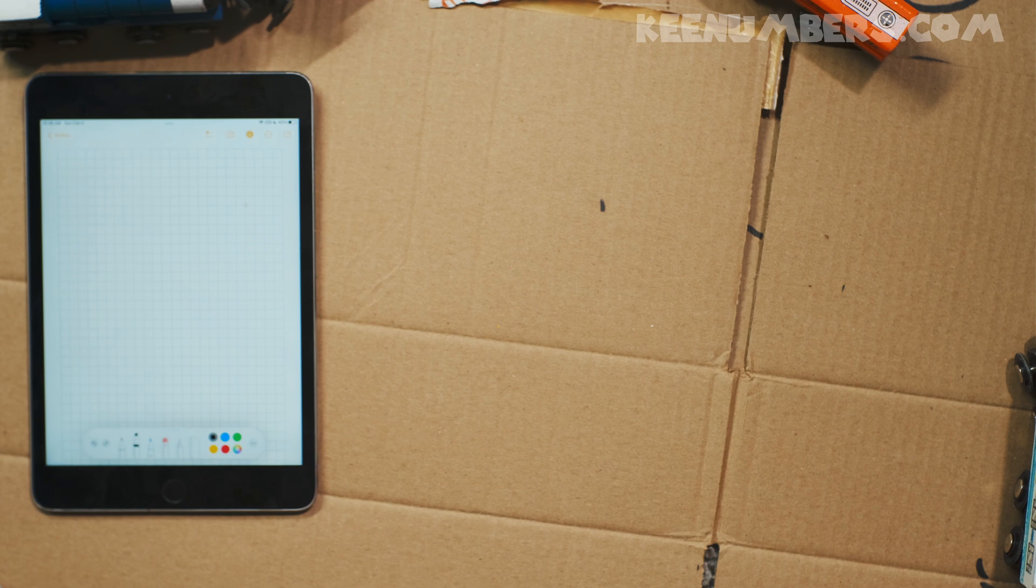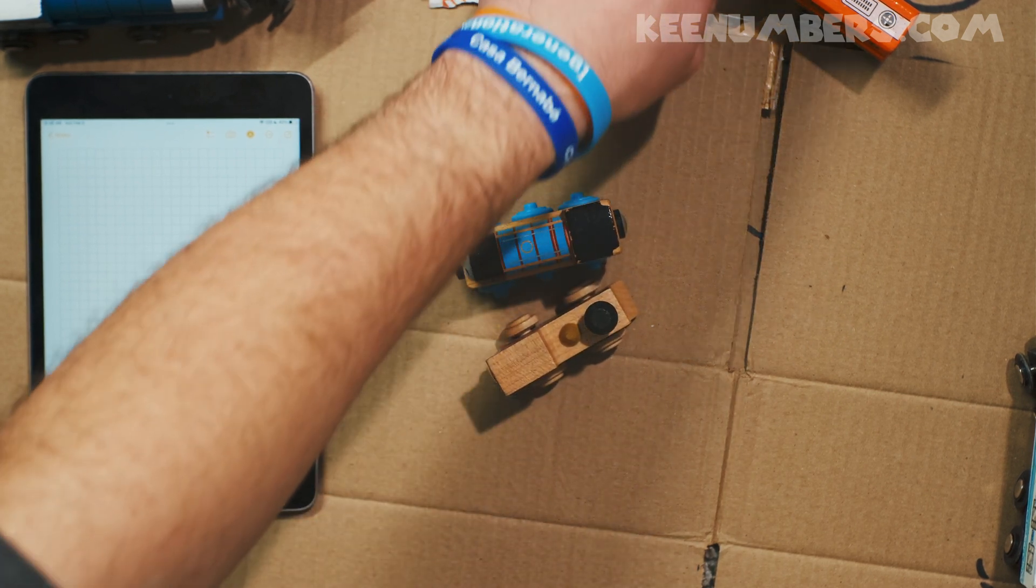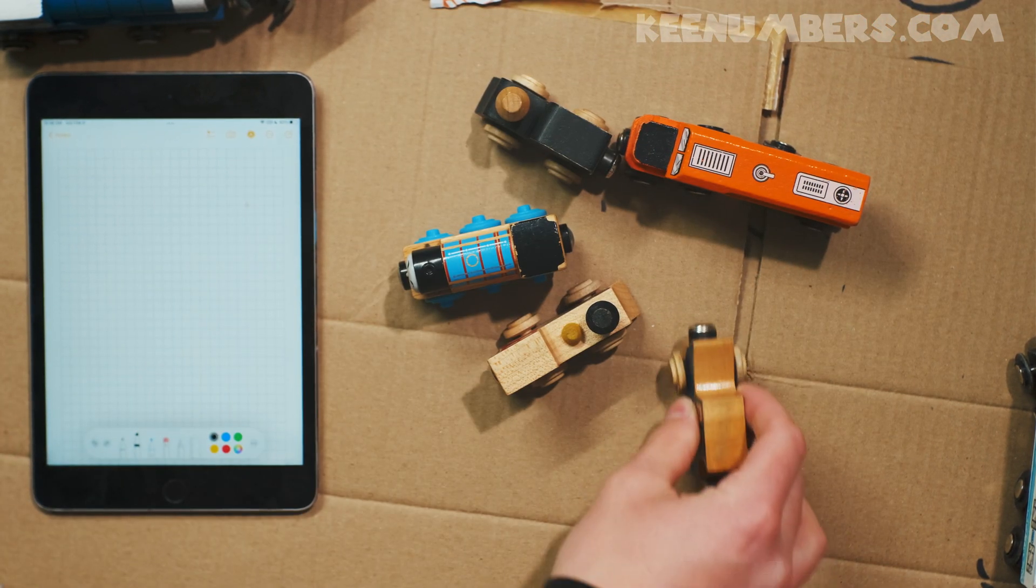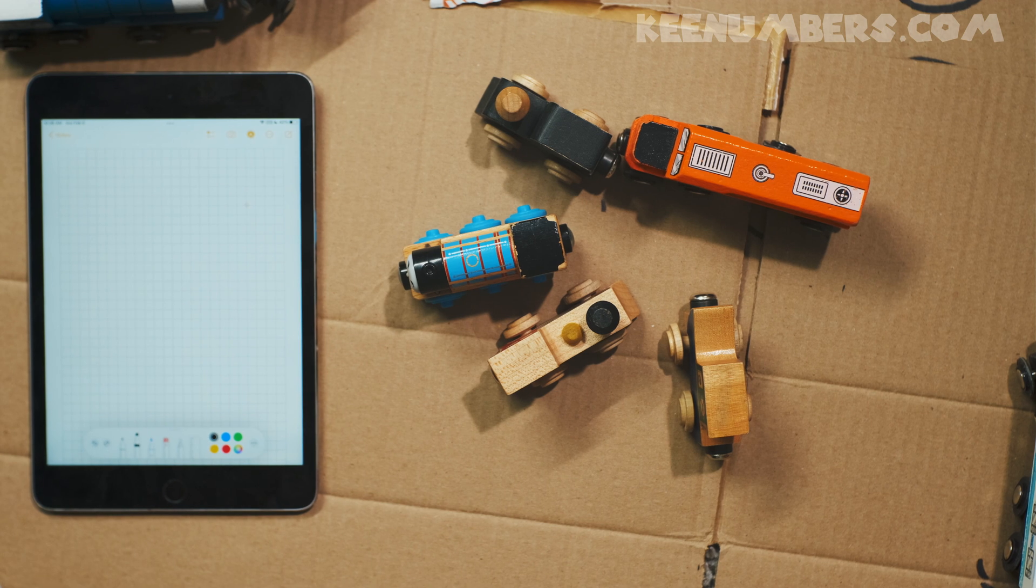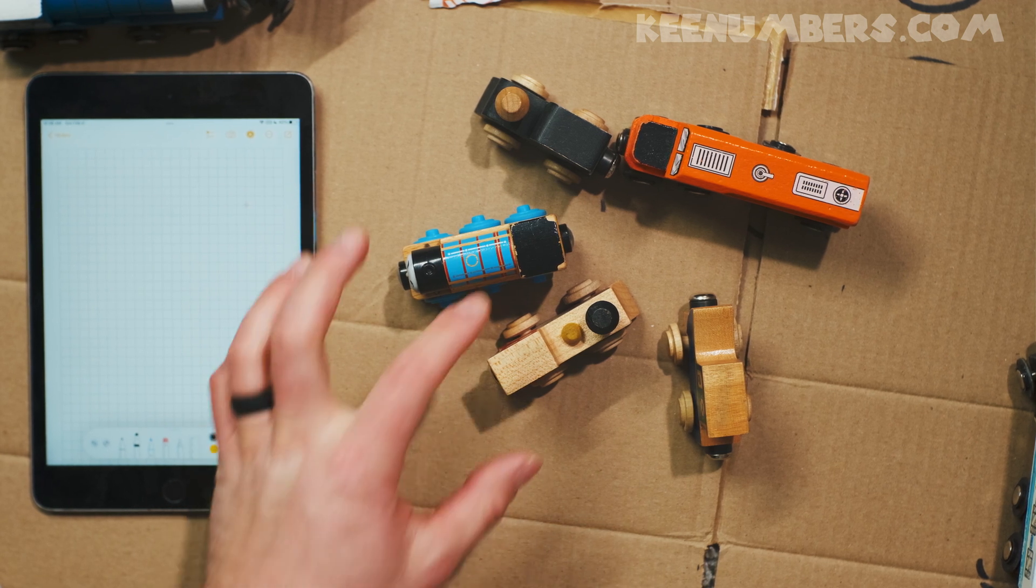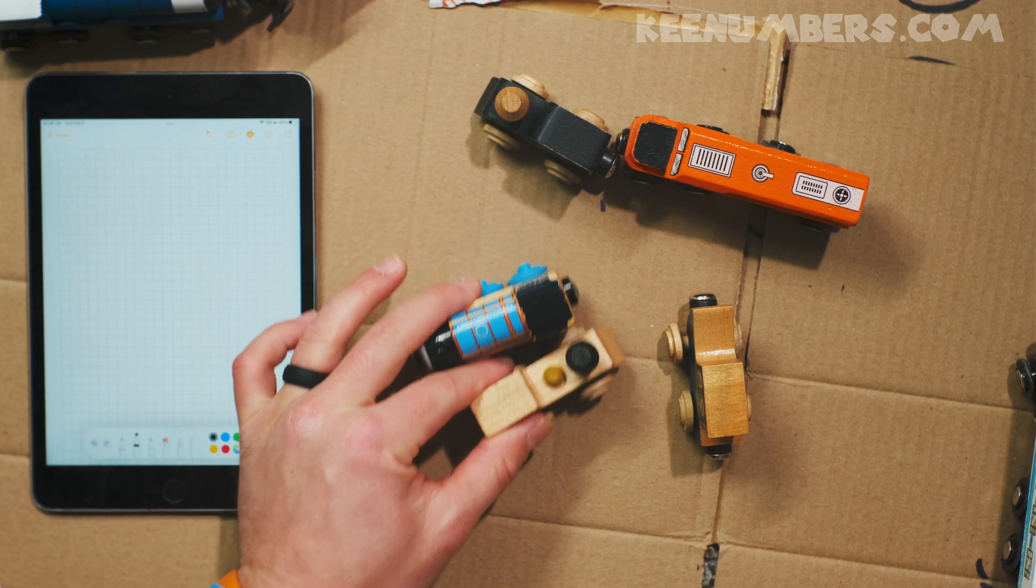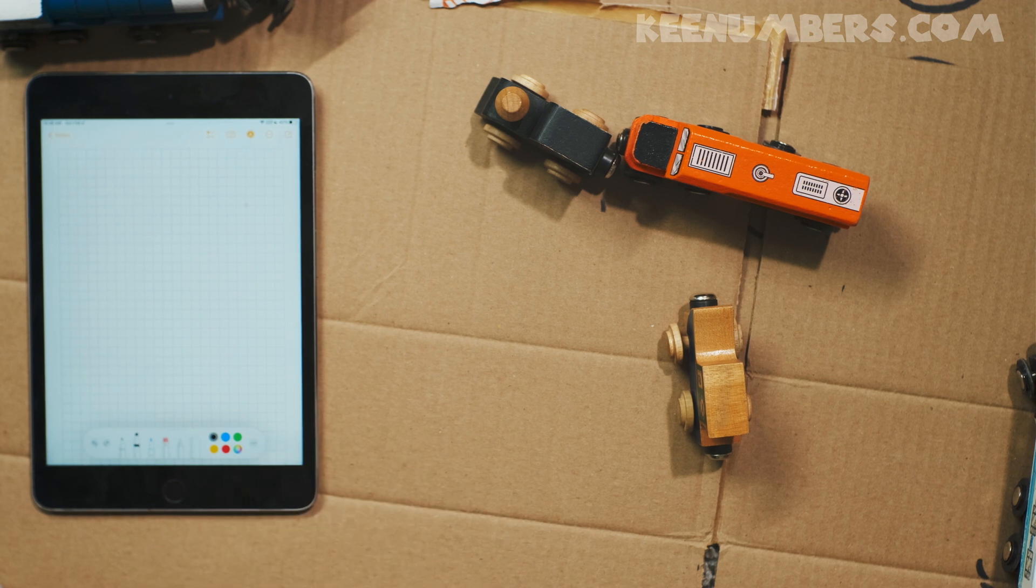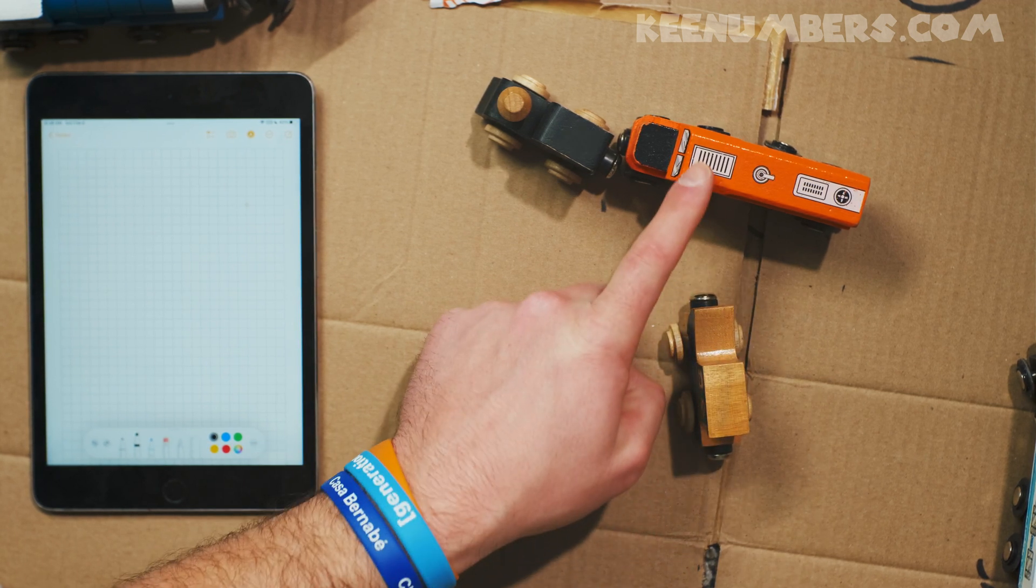One train car. What if you have five trains? Let's take away two train cars. Five minus two. Five minus two is one, two, three.